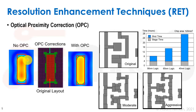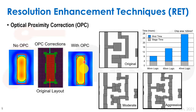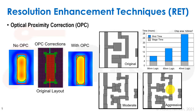OPC corrections take the layout, model the photolithographic process in detail, and run heavy algorithms that add small corrections — little pixel-like additions to the mask shapes. For moderate OPC you see some changes; as processes shrink, corrections become more aggressive with many additions and modifications to rectangles. This is not done by the chip designer. We lay out using DRC rules the fab provides, tape out our perfect rectangles, and the corrections happen downstream.